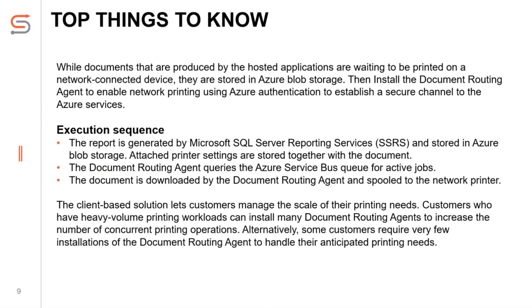So, what are the top things to know about the solution? While documents are produced by hosted applications and waiting to be printed on a network-connected device, they are stored in Azure Blob Storage. Install the Document Routing Agent to enable network printing, using Azure authentication to establish a secure channel to Azure services. The execution sequence is: the report is generated by Microsoft SQL Server Reporting Services (SSRS) and stored in Azure Blob Storage along with the printer settings. The Document Routing Agent then queries the Azure Service Bus queue for active jobs, downloads the document, and spools it to the network printer.